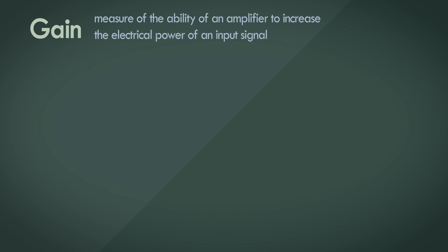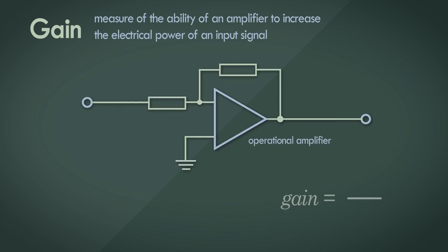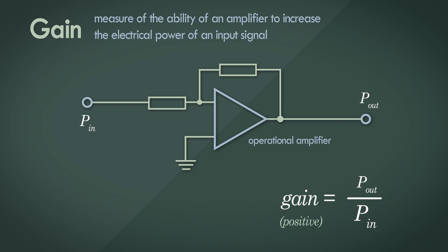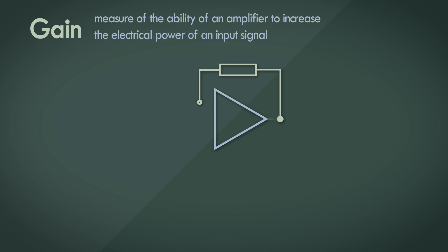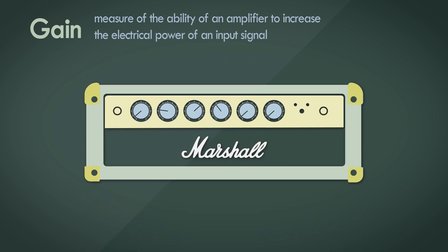Gain is an objective measurement, used in the context of electronics as a measure of the ability of an amplifier circuit to increase or decrease the electrical power of the input signal. Gain is the ratio between the electrical power of the signal at the output stage to the electrical power of the signal at the input stage. If the electrical power of the output signal is higher after amplification, the gain is positive, and if it's lower, the gain is negative. You might have come across gain controls on amplifiers or audio interfaces.